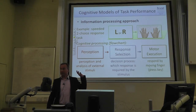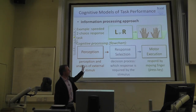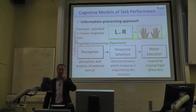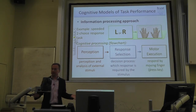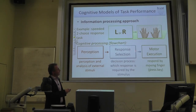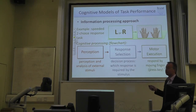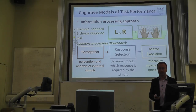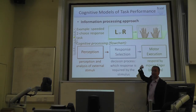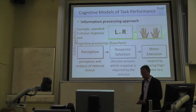Our experimental manipulation making the mapping more complicated affects specifically the response selection stage — perception stays the same and motor execution stays the same, but the mapping is more complex, so the duration of response selection is prolonged. In more detail, you could subdivide such a simple task into seven or eight processing stages. For instance, motor execution can be subdivided into motor initiation — just giving the go signal — and the actual execution — the finger movement.